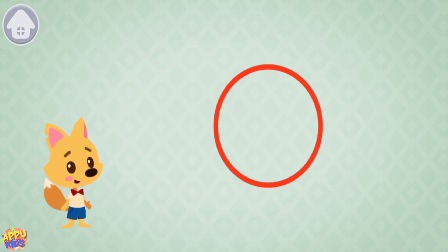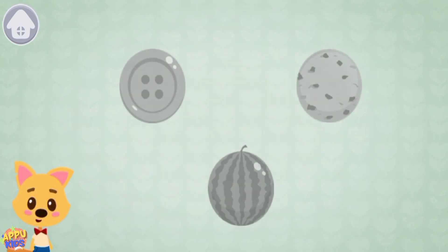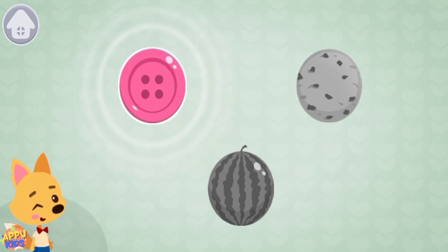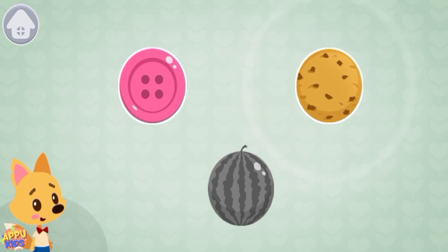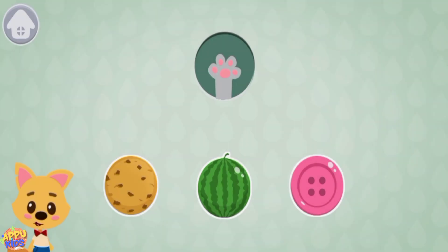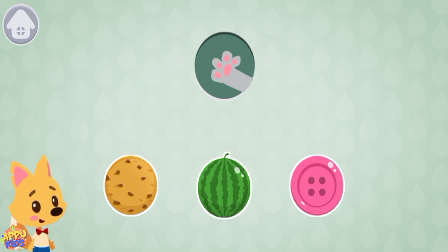Tap on the circle. These items are round. Tap on the round items: button, cookie, watermelon. Drag all the round items to the round window above.